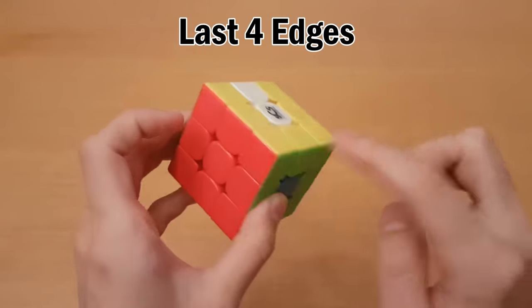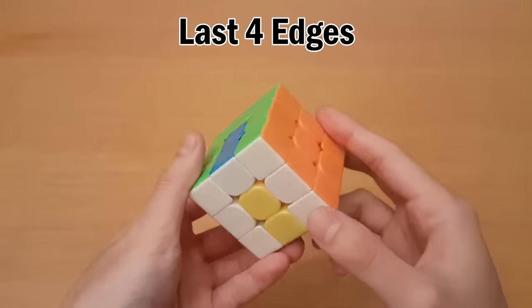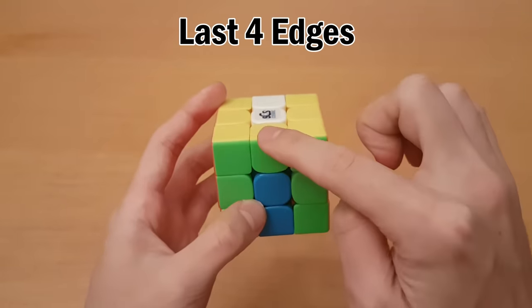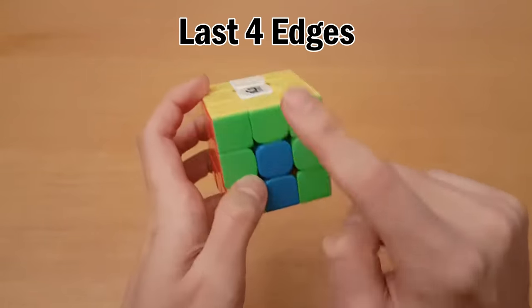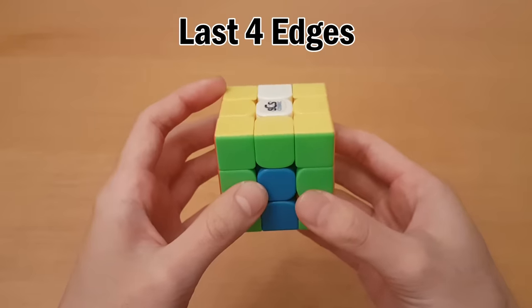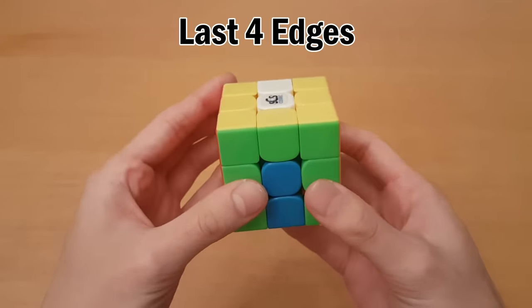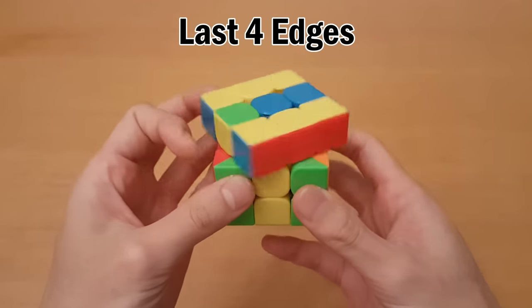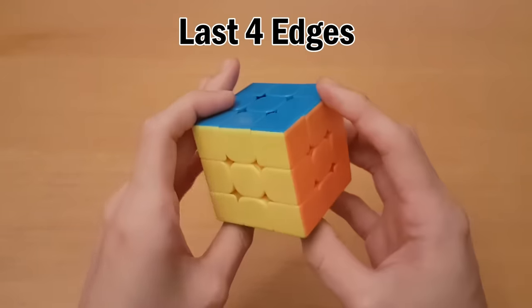Next what happens is if you line up these edges, then you just have a three cycle of edges to end off. So this one belongs here, which belongs here, which belongs here. So this is pretty intuitive if you think about it, it's just a sequence of M's and U2's. And then that solves it.